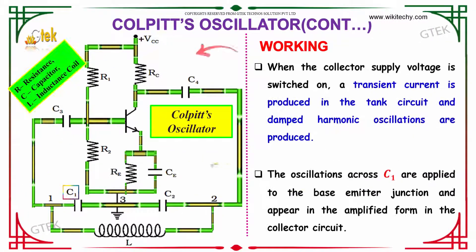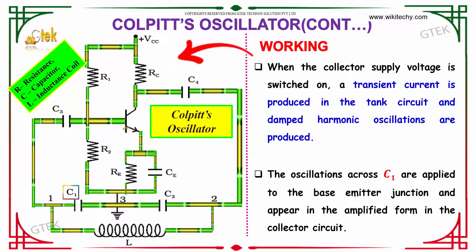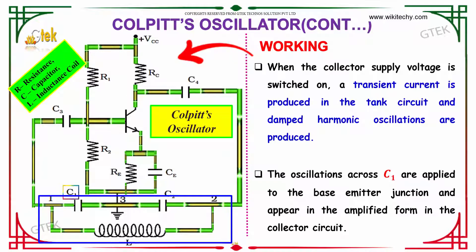Here is the working principle. When the collector supply voltage is switched on, a transient current is produced in the tank circuit, and damped harmonic oscillations are produced.